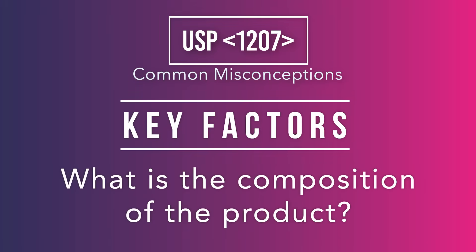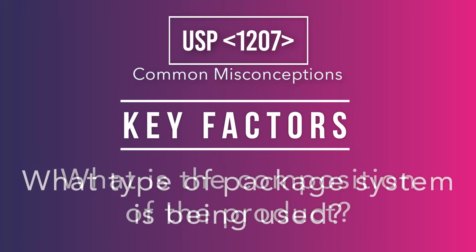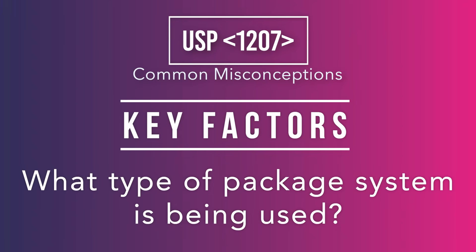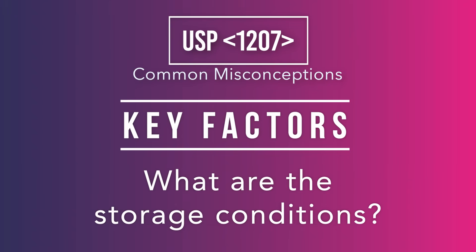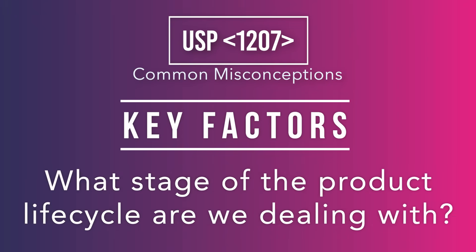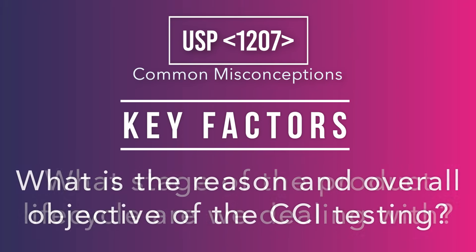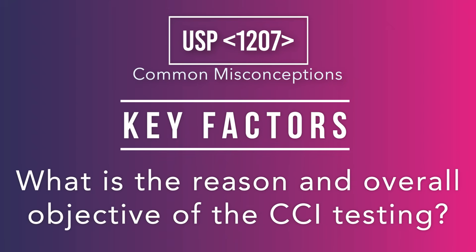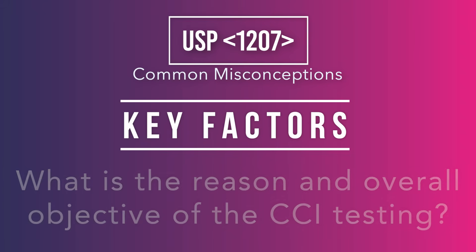What is the composition of the product? What type of package system is being used? What are the storage conditions? What stage of the product life cycle are we dealing with? What is the reason and overall objective for the CCI testing? Understanding these critical issues will help to define the optimal method for that specific system.